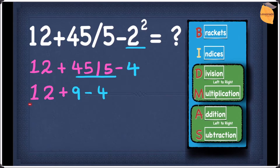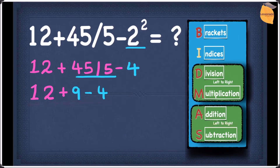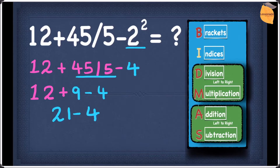In this example we have two operations at the same level, because addition and subtraction are at the same level. So we work from left to right. That means 12 plus 9 gives 21, and then 21 minus 4 gives 17. So the answer for this question is 17.